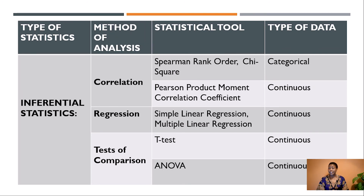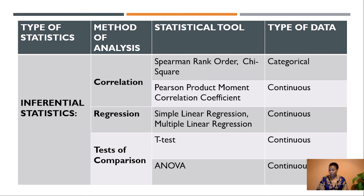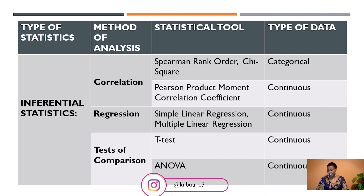Under inferential statistics, there are three methods: correlation, regression, and tests of comparison. For correlation: Spearman rank order is for ordinal data, chi-square is for nominal categorical data, and Pearson product-moment correlation coefficient is for continuous data. For regression: simple and multiple regression are for continuous data — and do not forget binary logistic regression, which we discussed in earlier lessons. For tests of comparison: t-test, with three types, and ANOVA (analysis of variance), both for continuous data.